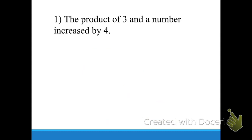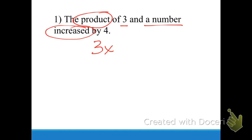The next thing on your cutout — we're going to do these. The same idea applies: what's first goes first, what's second goes second. The first one says 'the product' — that means multiply. 'The product of three and a number increased by four.' The product of three and a number is three X, and increased by four means we add four. So this one is three X plus four.